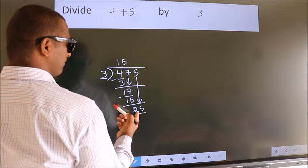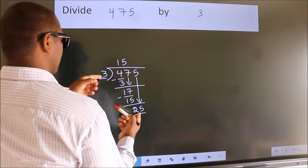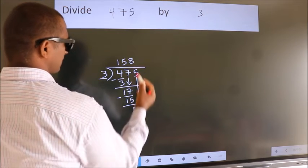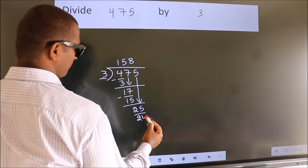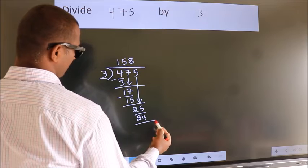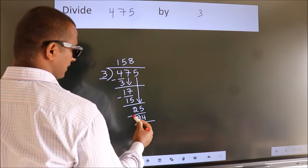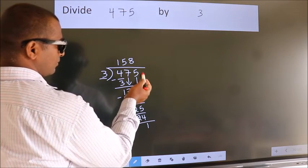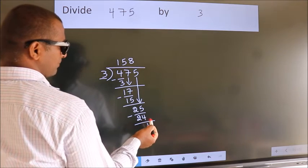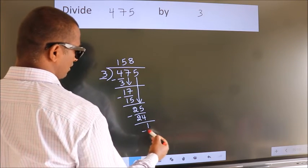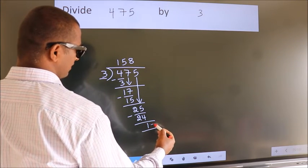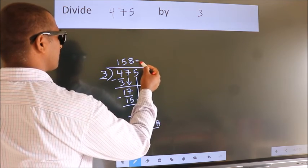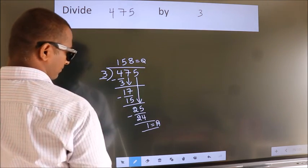A number close to 25 in the 3 times table is 3 eights 24. Now we subtract. We get 1. No more numbers to bring down, so we stop here. This is our remainder. This is our quotient.